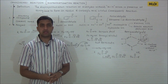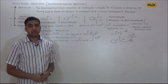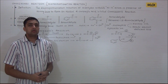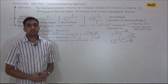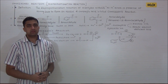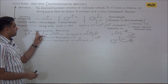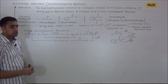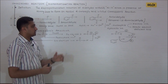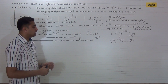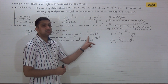Let us study cross Cannizzaro reaction. In Cannizzaro reaction, if both the molecules involved are non-identical, then the reaction is called a cross Cannizzaro reaction. Example: the reaction of formaldehyde and benzaldehyde with strong base NaOH. It is observed that benzaldehyde undergoes reduction to form benzyl alcohol and formaldehyde undergoes oxidation to form formic acid and then sodium formate.